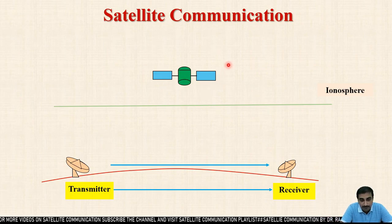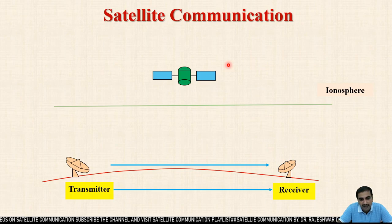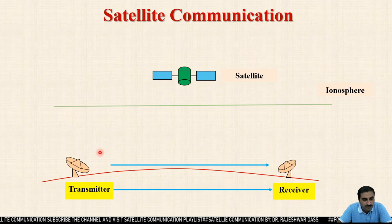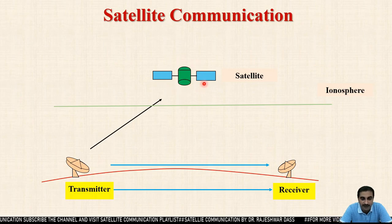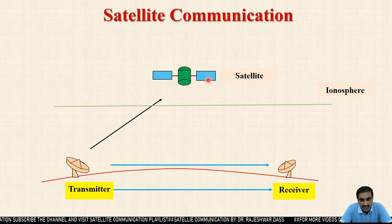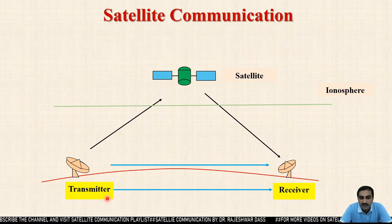The path the satellite follows is known as the orbit. When you connect the transmitter and the receiver through the satellite, it is known as satellite communication. The transmitting antenna sends the signal towards the satellite, and the satellite's receiver receives that signal and reflects it back towards the receiver side. In this way, we can set up a link between the transmitter and receiver.